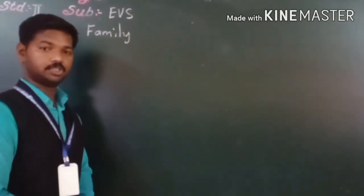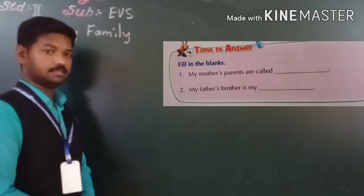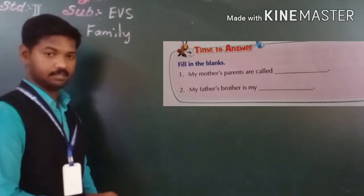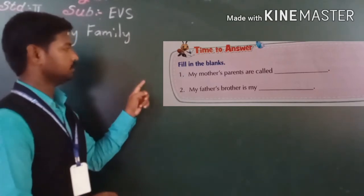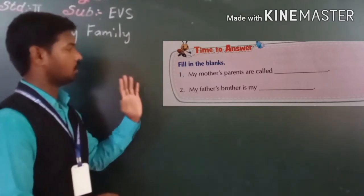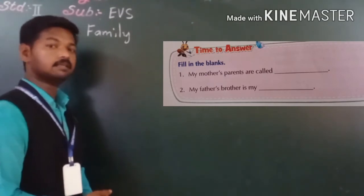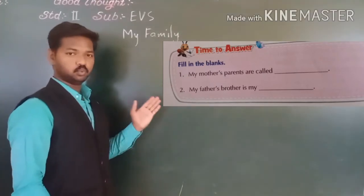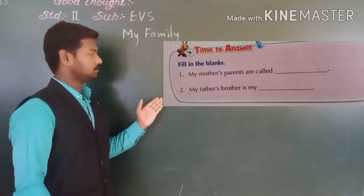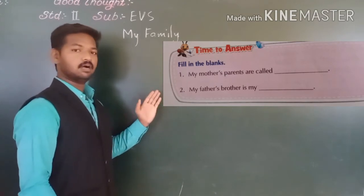Now see on page number four, time to answer. For this, two fill in the lines are given there. Number one, my mother's parents are called maternal grandparents. Number two, my father's brother is my uncle.